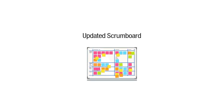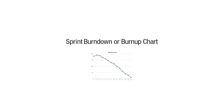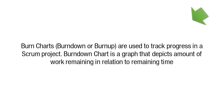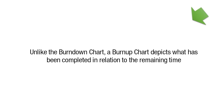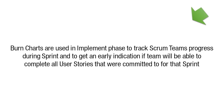The Updated Scrum Board reflects information from the updated sprint backlog, including task updates, statuses, and estimates. Finally, Burn Charts — either burndown or burn up — are used to track progress. A burndown chart depicts the amount of work remaining relative to remaining time, while a burn up chart depicts what has been completed relative to remaining time. Burn charts are used in the Implement Phase to track the team's progress and get an early indication of whether committed user stories will be completed. This concludes our session on the Plan and Estimate phase.